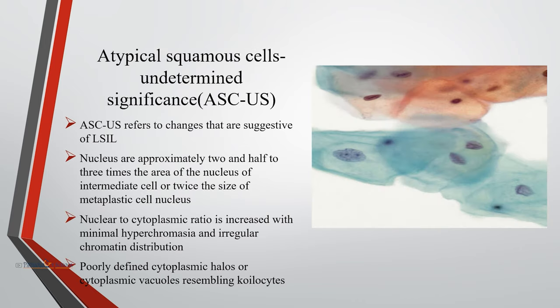Atypical squamous cells of undetermined significance (ASC-US) refers to changes suggestive of low-grade squamous intraepithelial lesion. The nucleus is approximately two and a half to three times the area of the nucleus of an intermediate cell, or twice the size of a metaplastic cell nucleus. The nuclear-to-cytoplasmic ratio is increased, with minimal hyperchromasia and irregular chromatin distribution. Poorly defined cytoplasmic halo or cytoplasmic vacuoles resembling koilocytes may be seen.